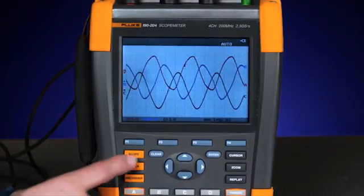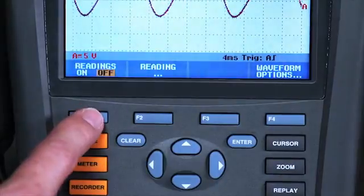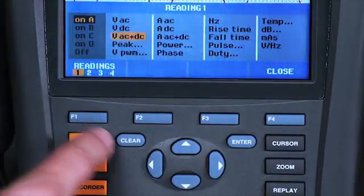Let's set up the readings starting with reading one, measuring the amplitude voltage on phase A.